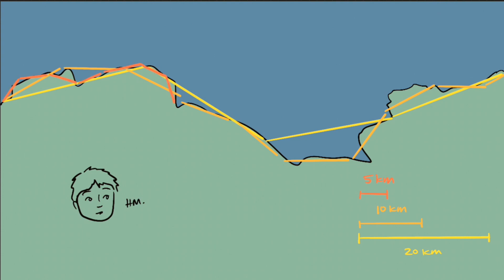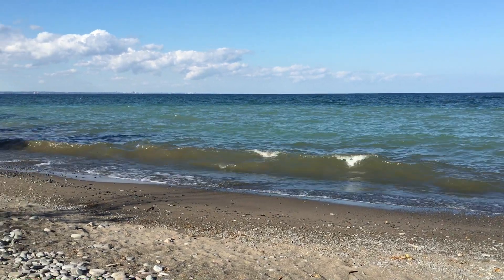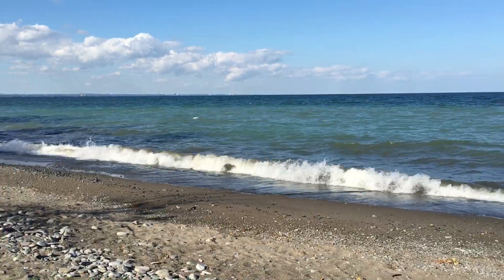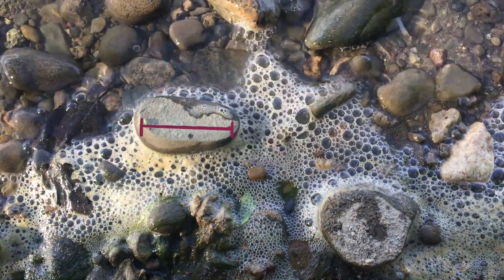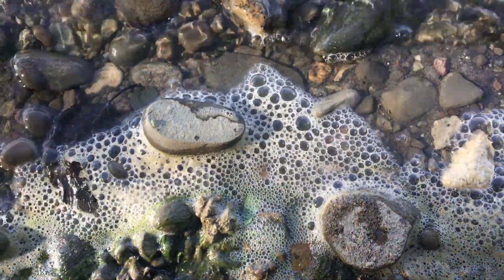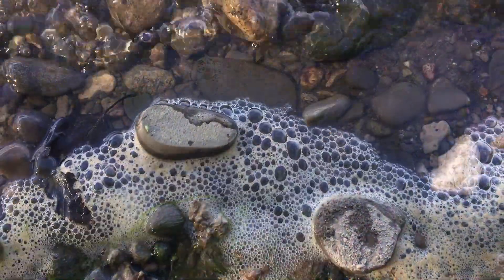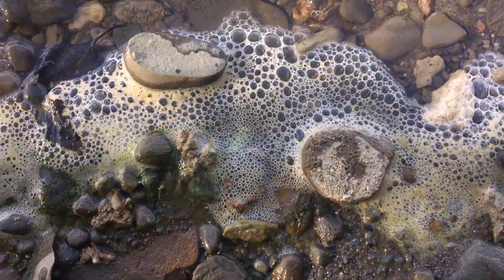When you measure with an even smaller unit, 5 kilometers, you get again a larger value for the length of the coastline. You think you might get a more accurate length if you try measuring the coastline on foot, say with a measuring unit of a pebble's diameter. Not only would that take a while, you'd also run into the same problem: the coastline seemingly gets longer the smaller measuring unit you use.